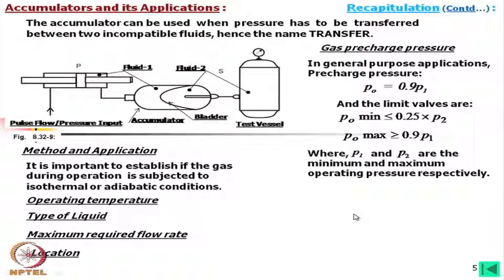It is important to establish whether the gas during operation is subjected to isothermal or adiabatic conditions. If the process is occurring very quickly, we consider adiabatic (isentropic) conditions; if it is slow, isothermal. We have to calculate accordingly. The operating temperature and type of liquid are also important, as is the maximum required flow rate and the location where the accumulator should be placed.